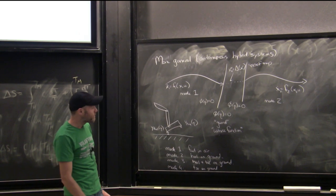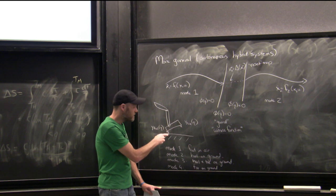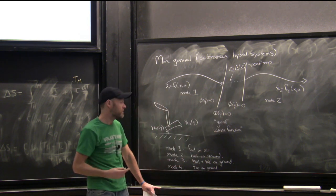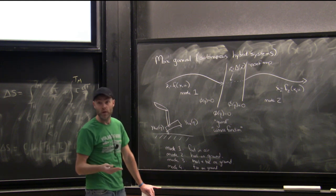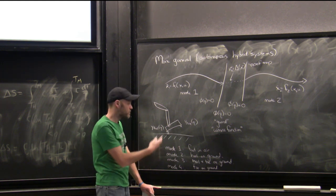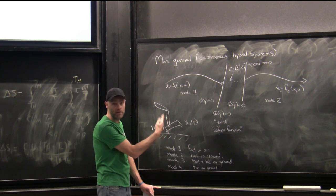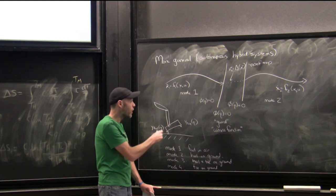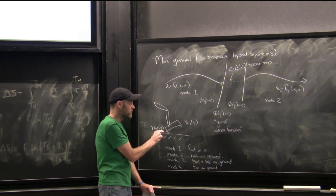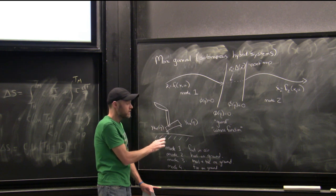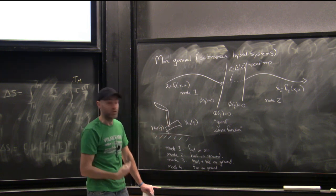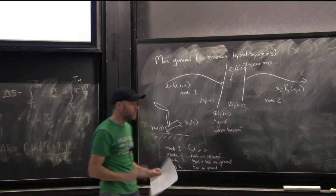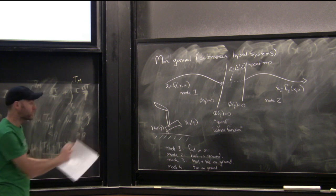The impulsive event — the instantaneous change in velocity — can be derived from the manipulator equations. If you've derived the manipulator equations from the Lagrangian and you know your guard function, you can compute what the impulsive force had to be. That's written up in the appendix and all those steps are clear.